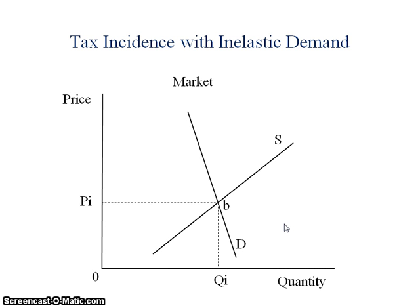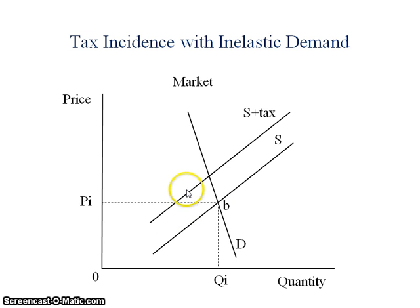Note that I've drawn a very steeply sloped demand curve to indicate relative inelasticity. When I pass my tax, remember it looks like a shift in the supply curve. And remember that the vertical distance between S and S plus tax is the per unit amount of the tax, so I'm going to label that S plus tax.